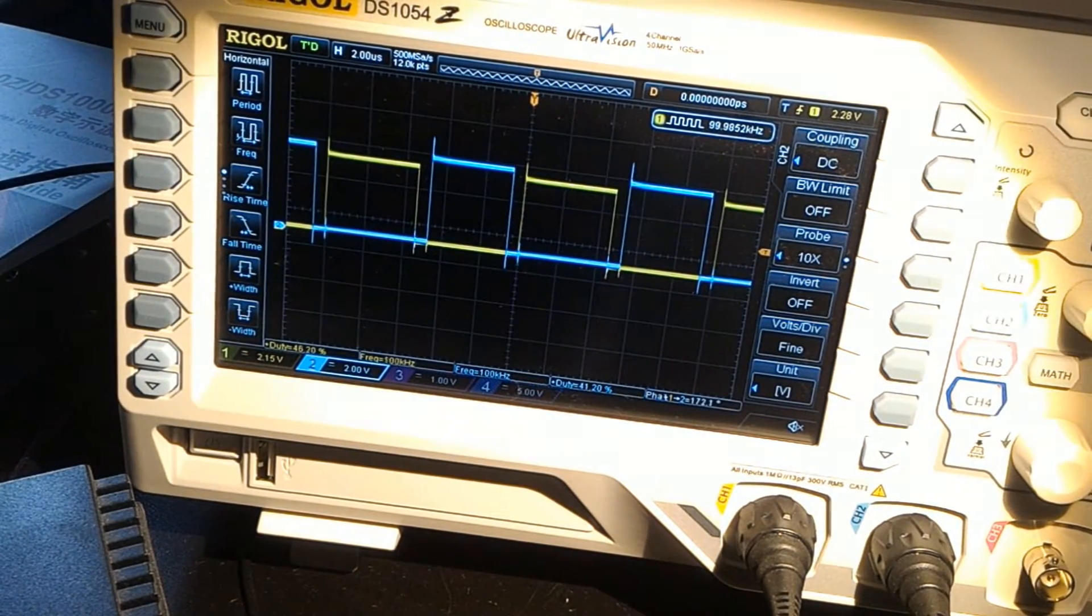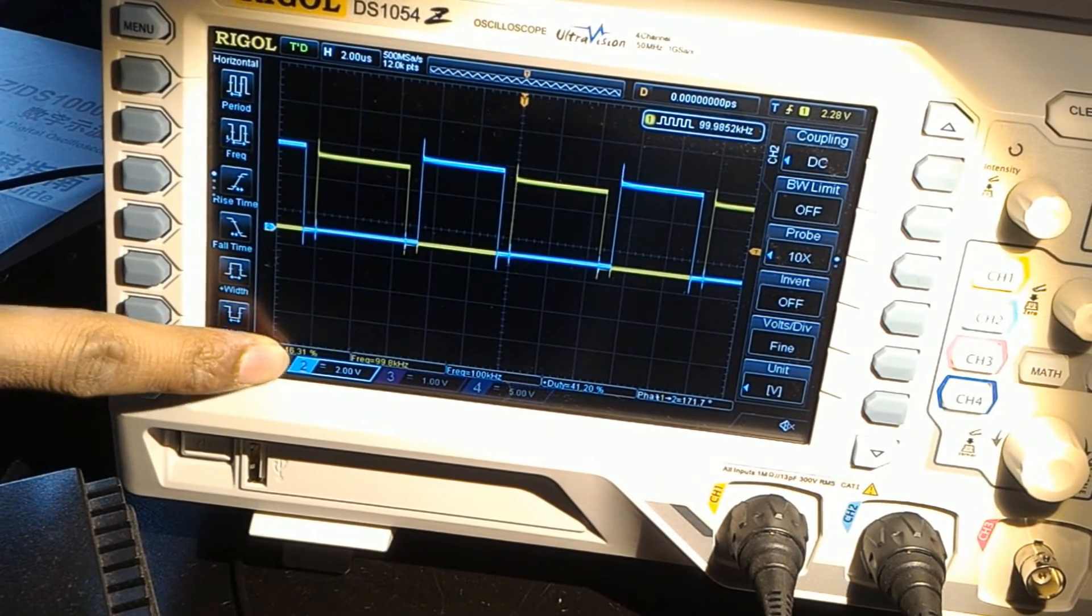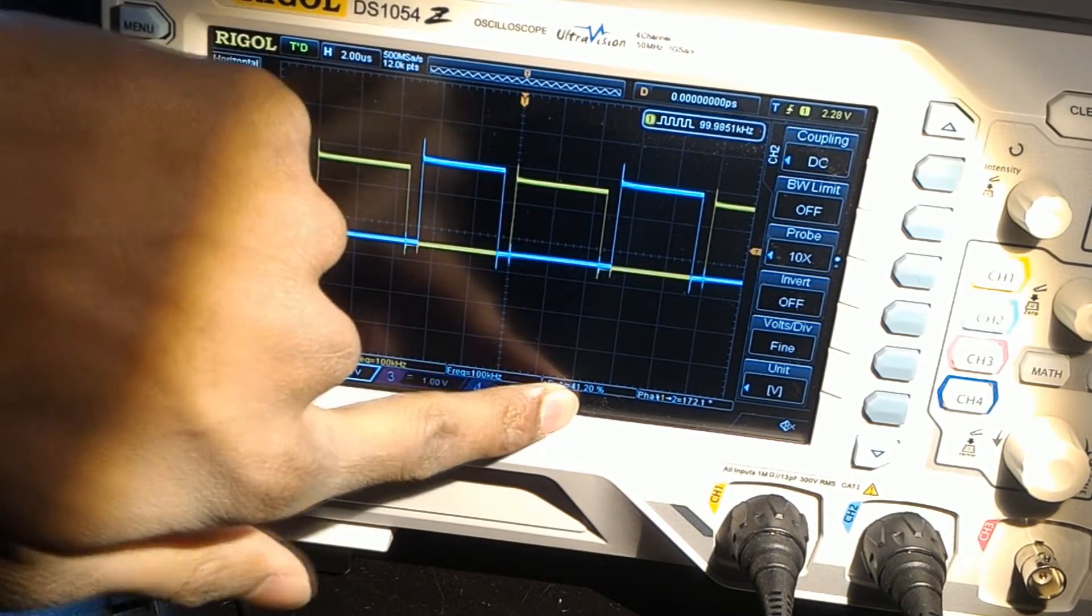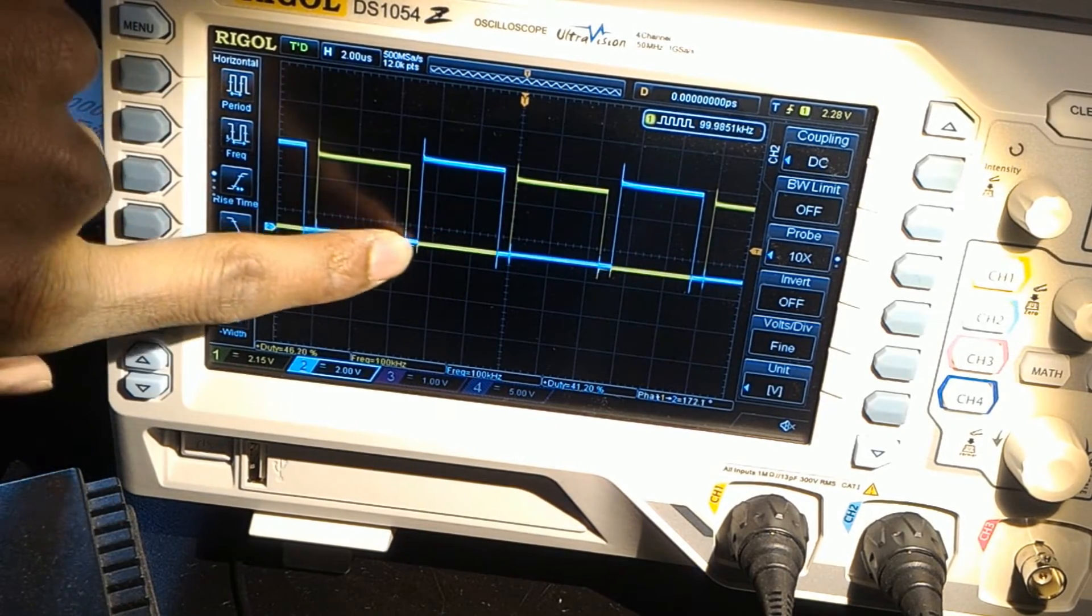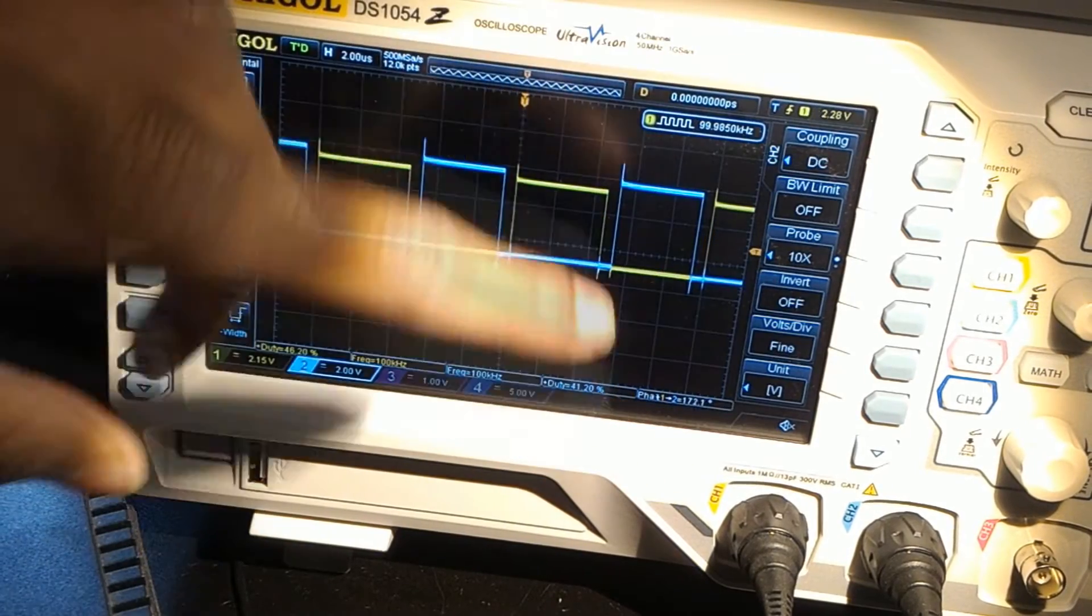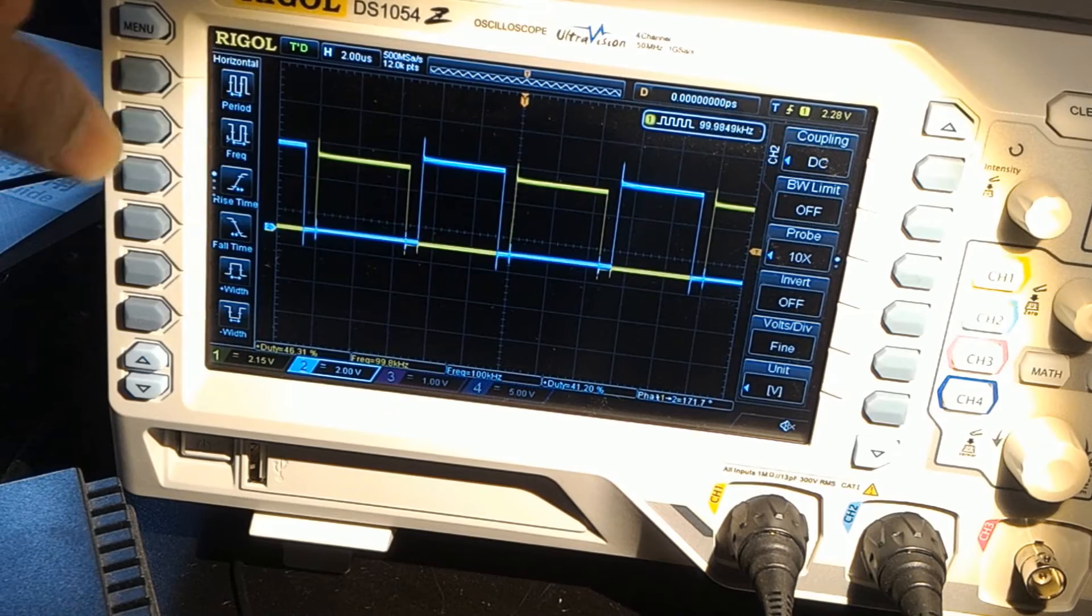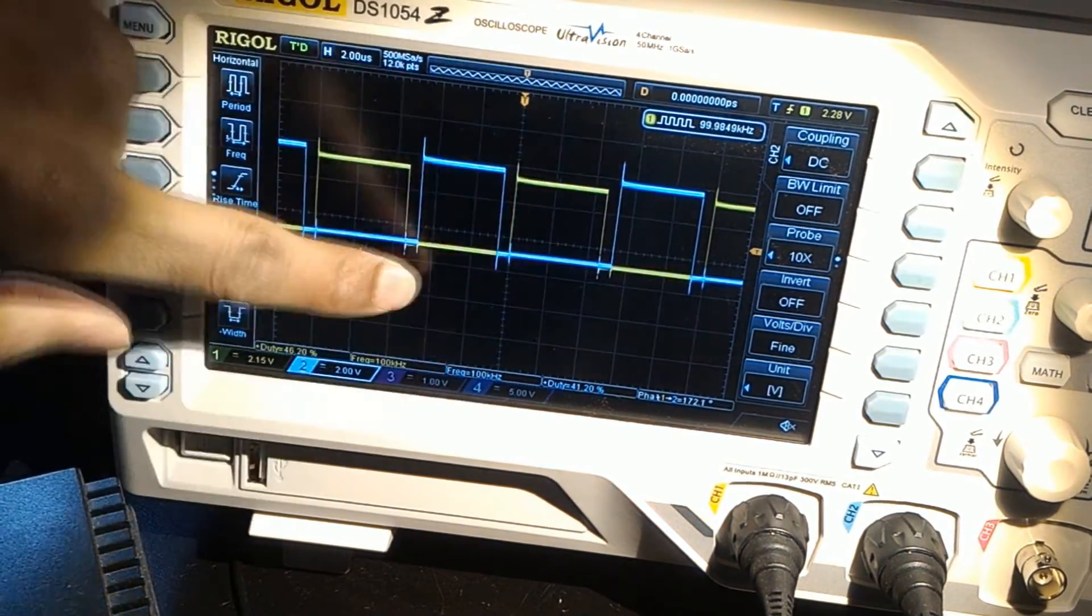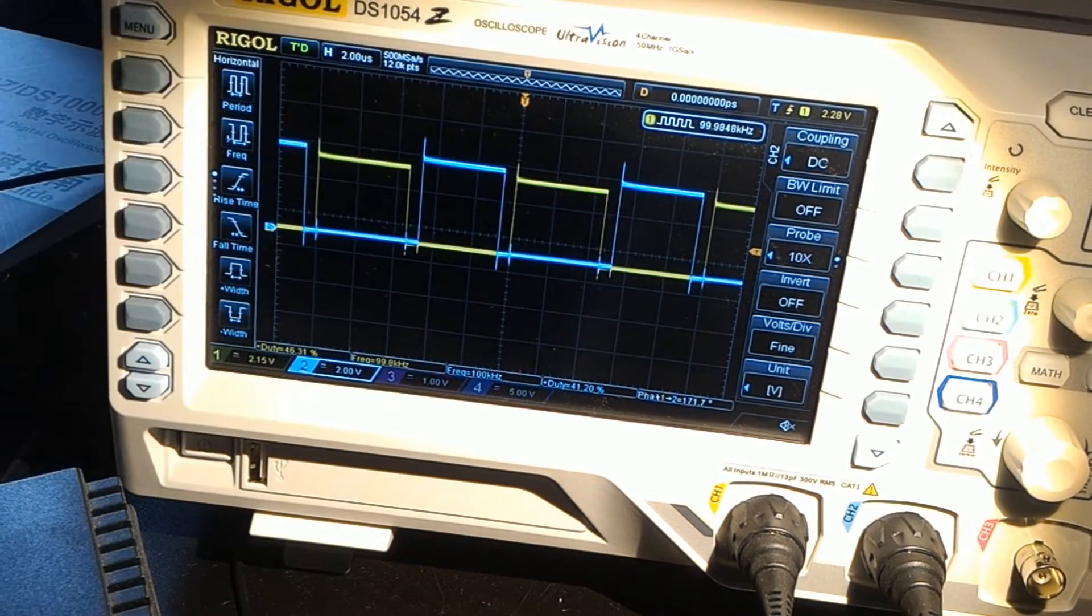It is currently switching one side at 46% duty cycle, and the blue wave at 41%. Because we want a dead time for the current to recover from the inductance from the transformer. Or else, we have even greater switching losses, which we do not want. So I have introduced a dead time right here, so we have a little bit more efficiency to play with.